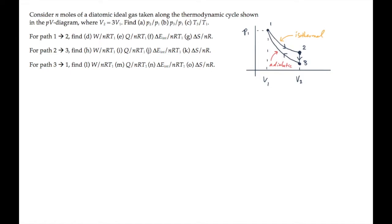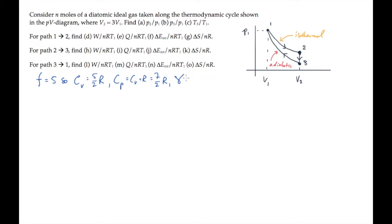There are a startling number of parts to this problem. Let's get started by noticing that there are 5 degrees of freedom in this diatomic gas, if we assume that vibrations are frozen out. So that tells us the value of Cv, the molar specific heat at constant volume, the value of Cp, and the adiabatic constant gamma, which is the ratio Cp to Cv. That's 7 fifths, or 1.40.